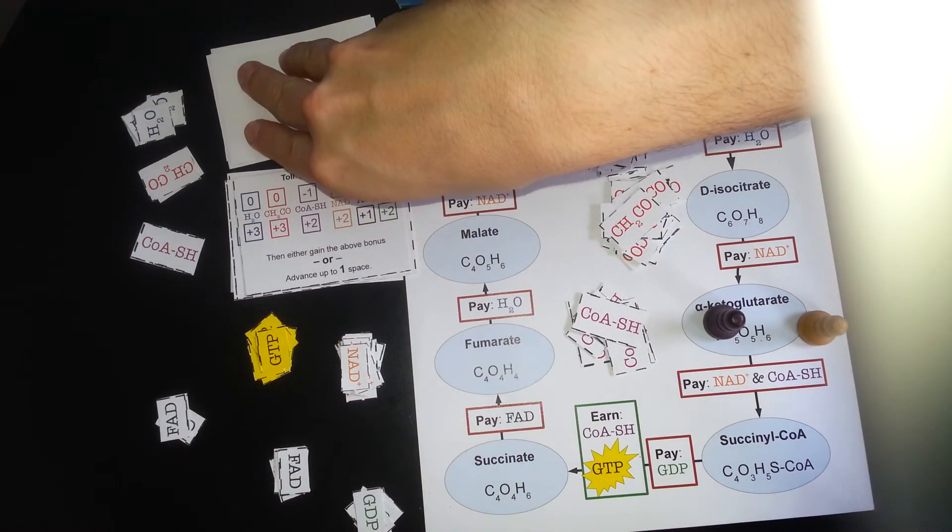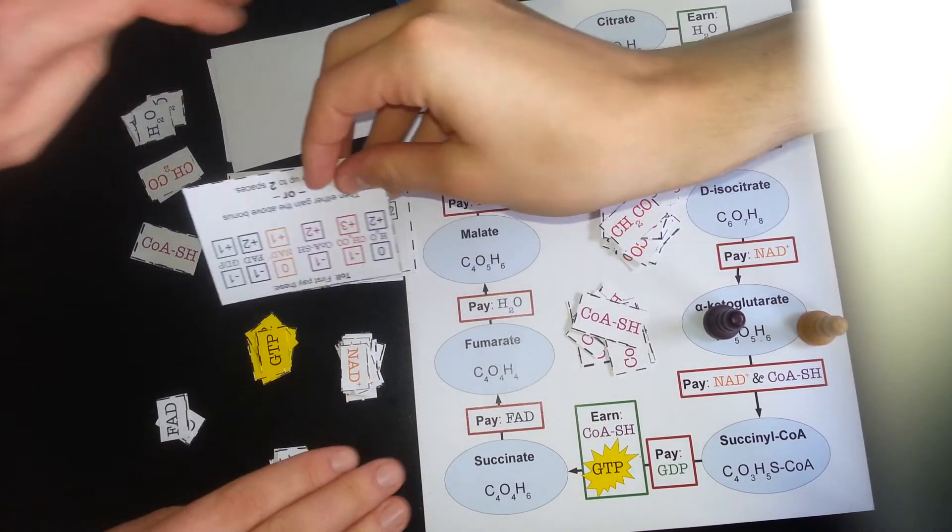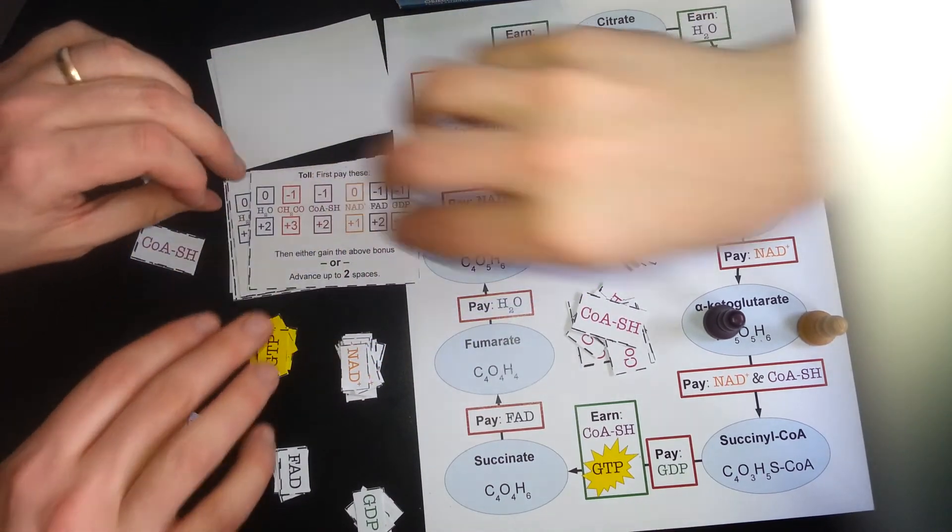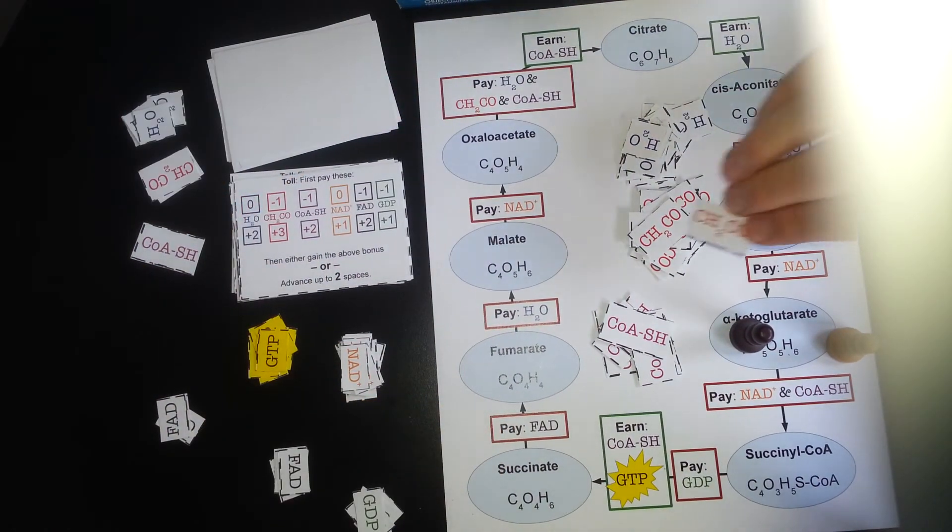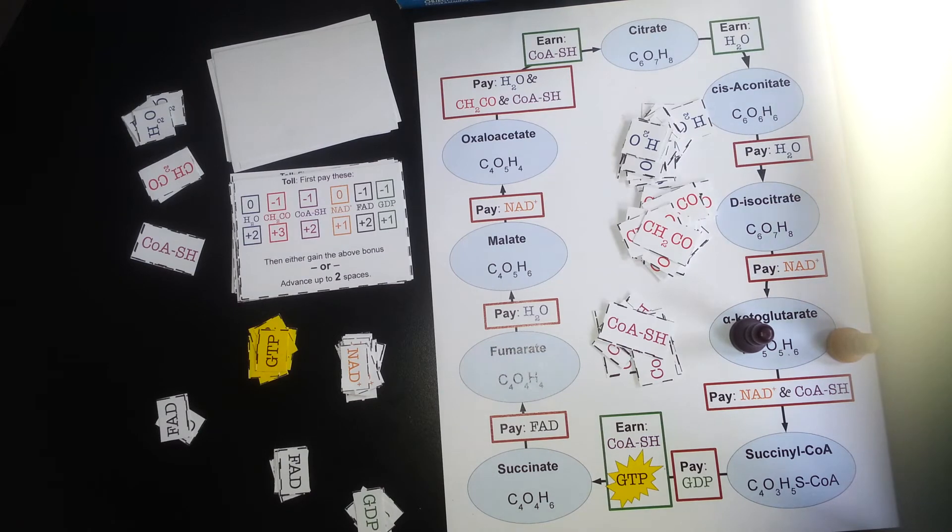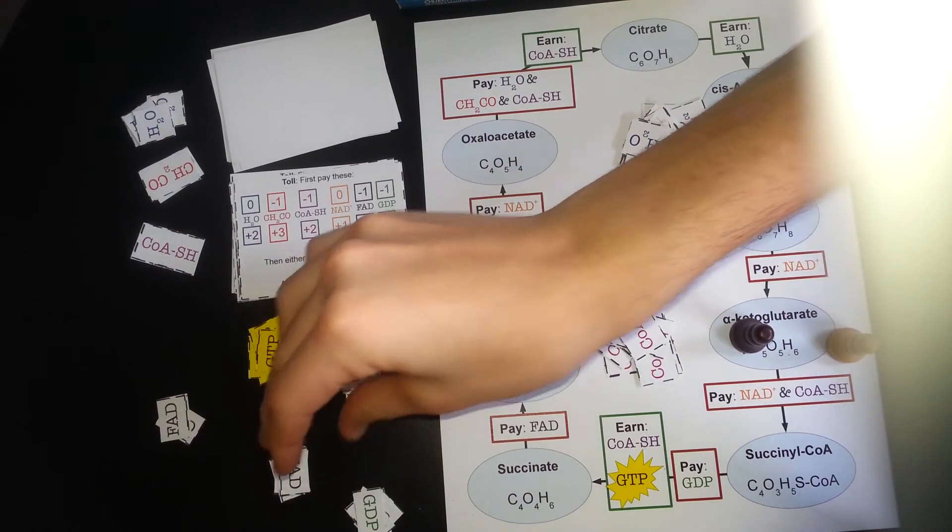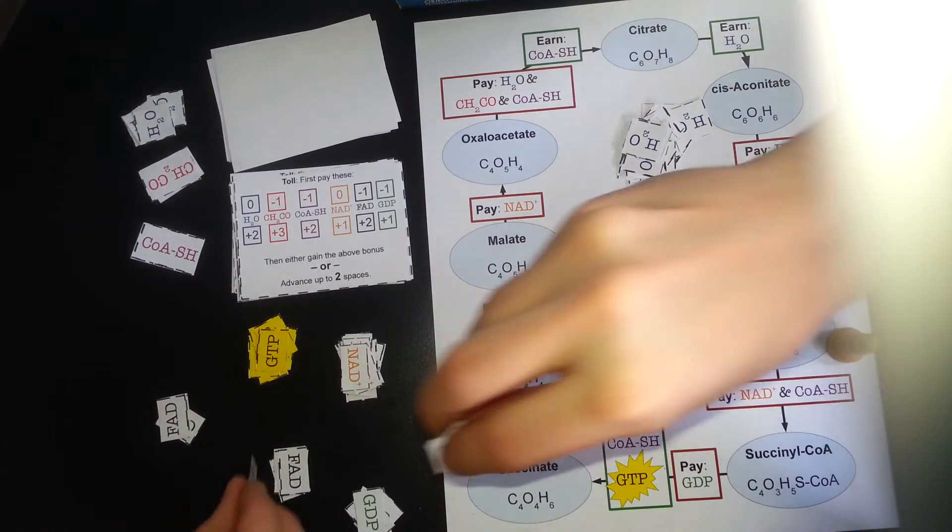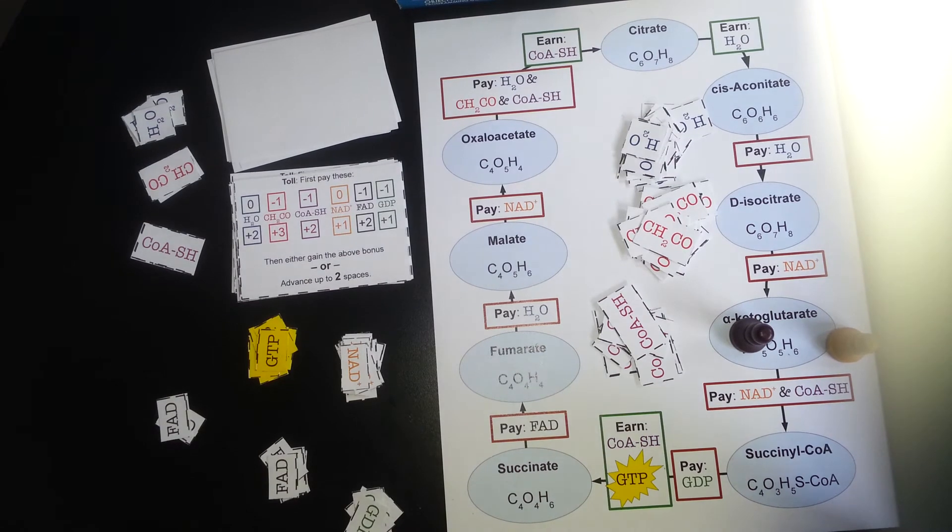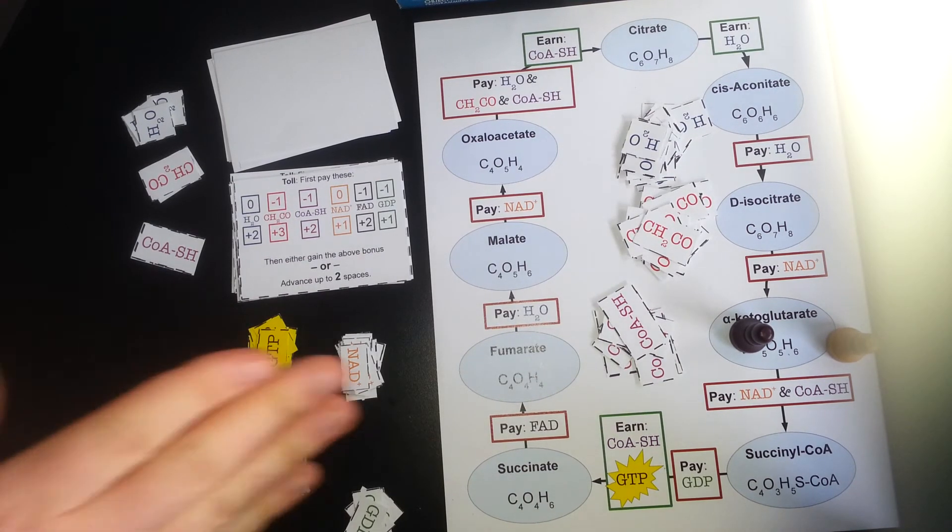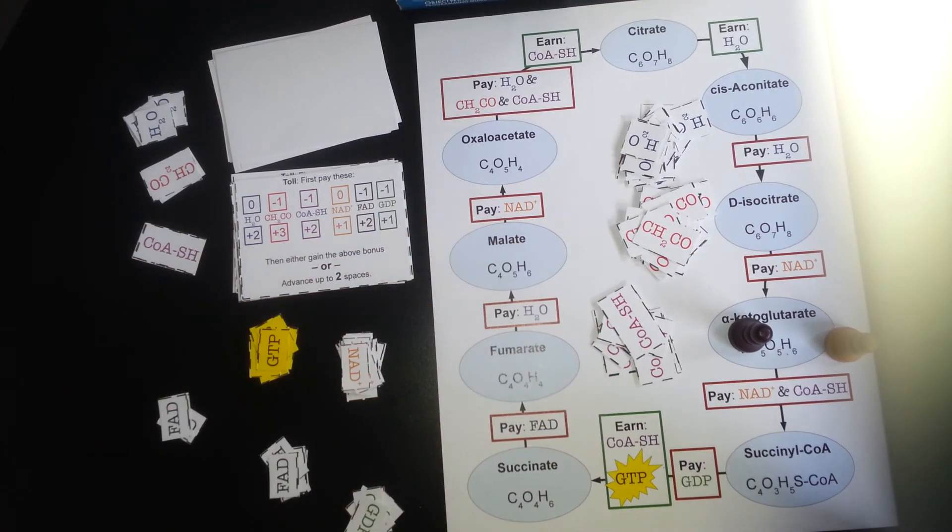Alright, my turn. Alright, so first I will pay the toll again. One FAD, and one FAD, and one GDP. Alright, now I can move two spaces or gain the bonus. It looks like I have enough to pay. Oh, good. Yeah. So I'm going to move. We want to do this demo until somebody earns a GTP point. So if he can do that now, that's excellent.